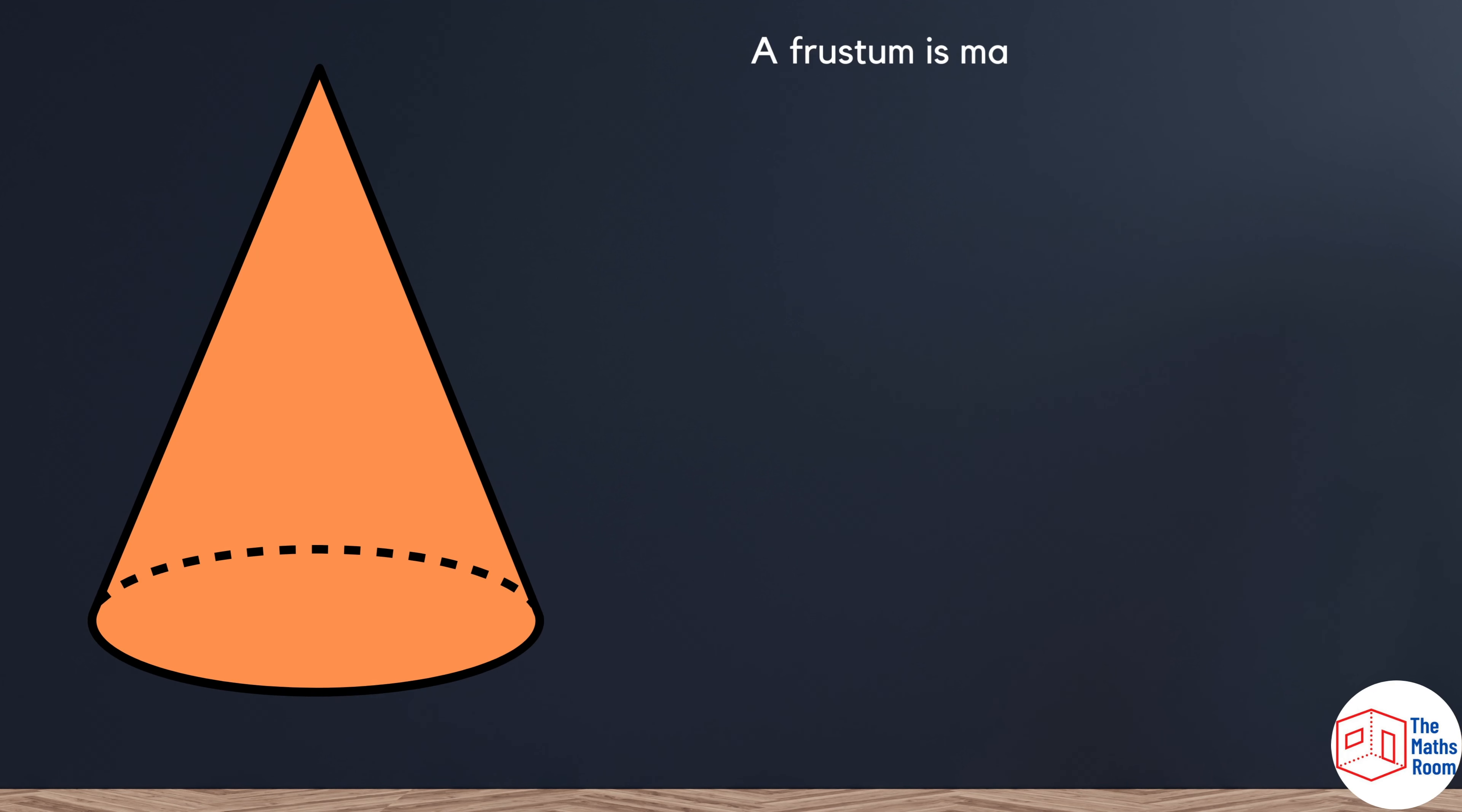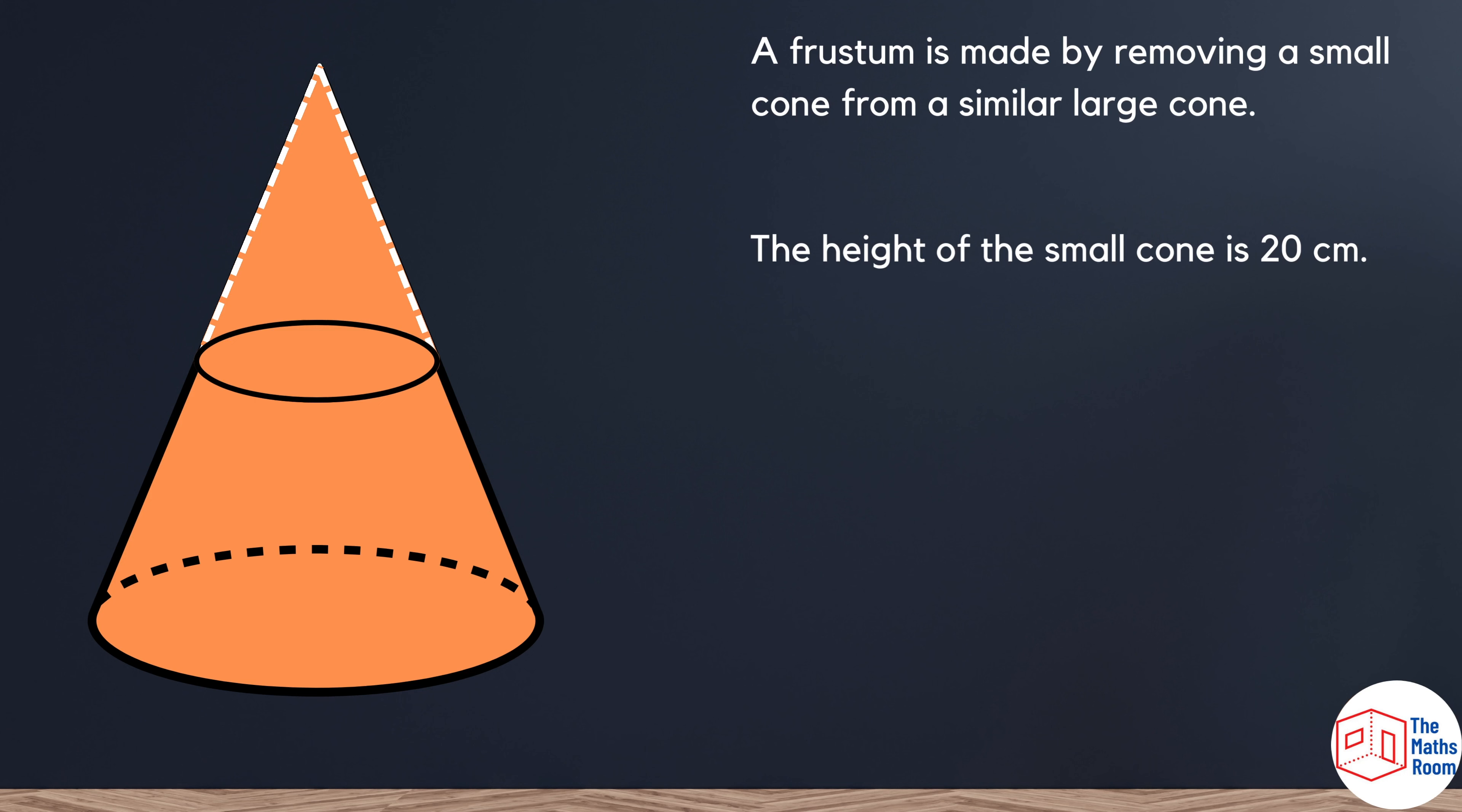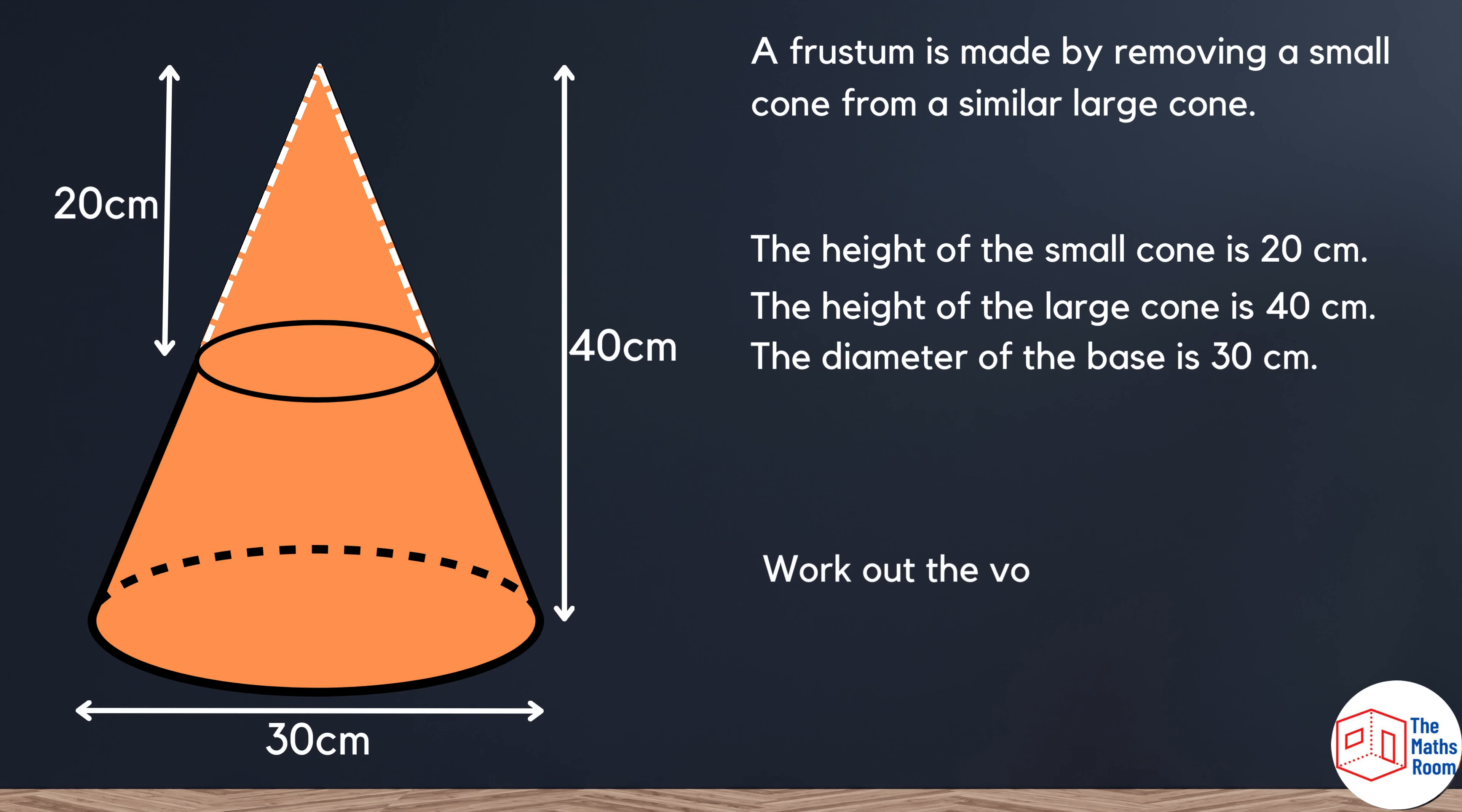Let's have a look at an exam question. A frustum is made by removing a small cone from a large cone. The height of the small cone is 20 centimeters. The height of the large cone is 40 centimeters. The diameter of the base is 30 centimeters, and they're asking us to work out the volume of the frustum.